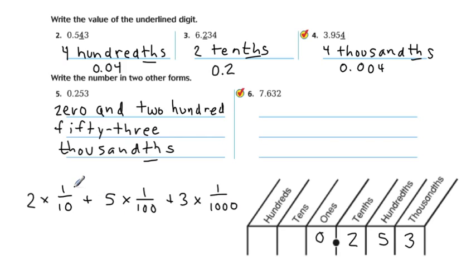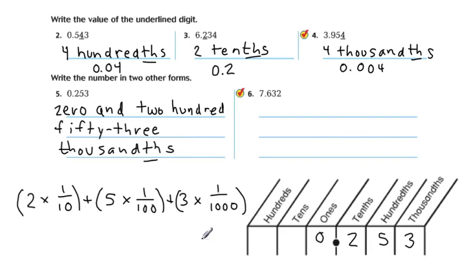And then put your parentheses around each one of those. And that's the expanded form of that number: 2 in the tenths place, 5 in the hundredths place, and 3 in the thousandths place.